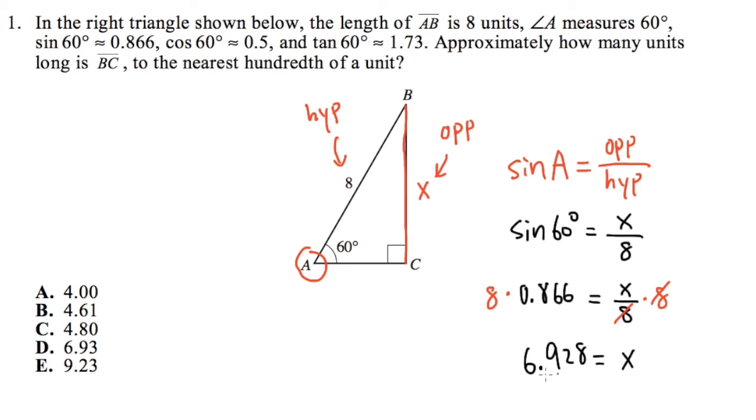So x is 6.928, and that's approximately 6.93. We see that that is choice D for our answer. And that's the length of BC. That's it for the first question.